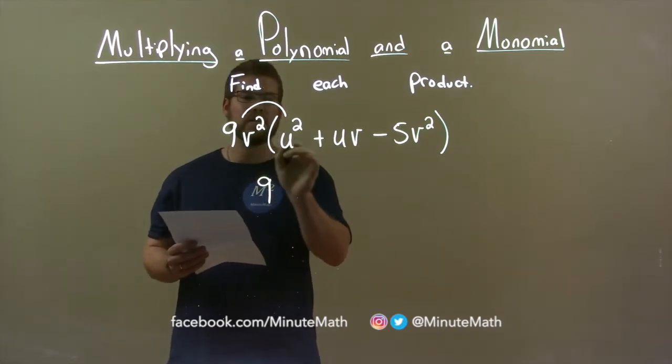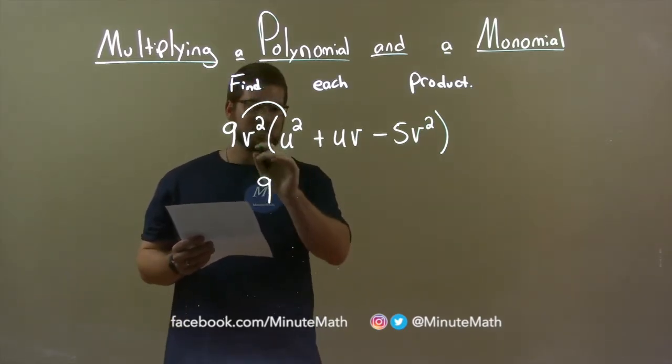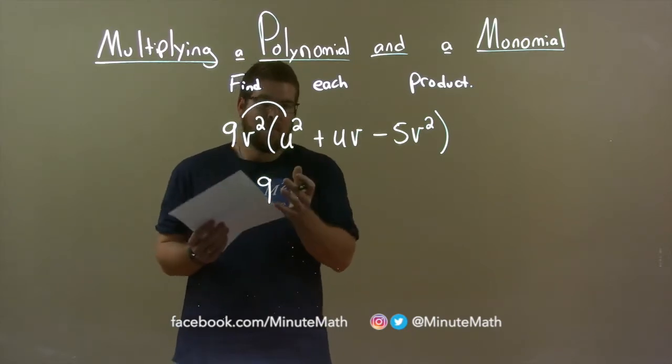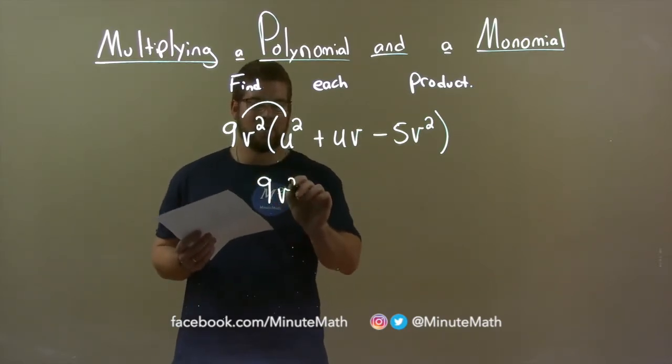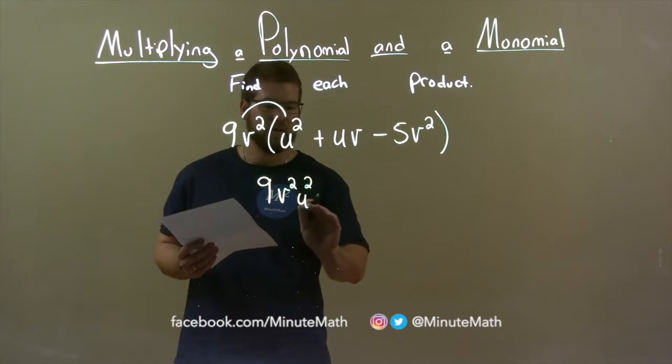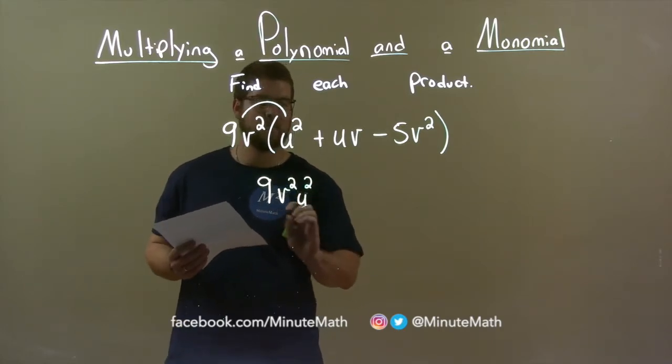v squared times u squared, well, that just brings down to each variable as we combine it. So, v squared comes down here, and then u squared right afterwards, and there we go.